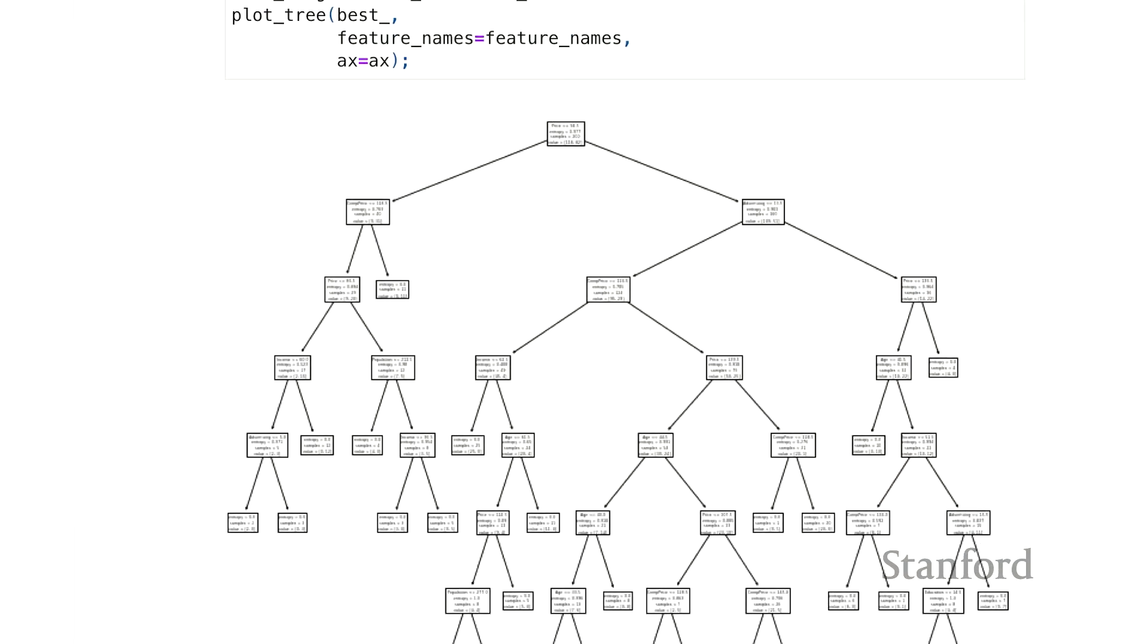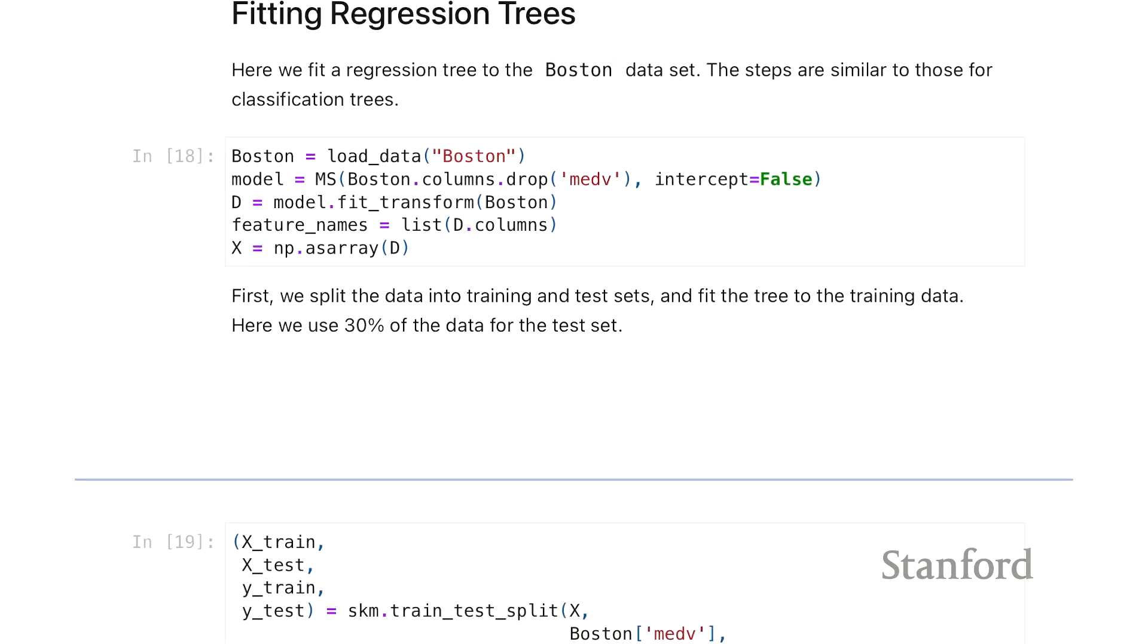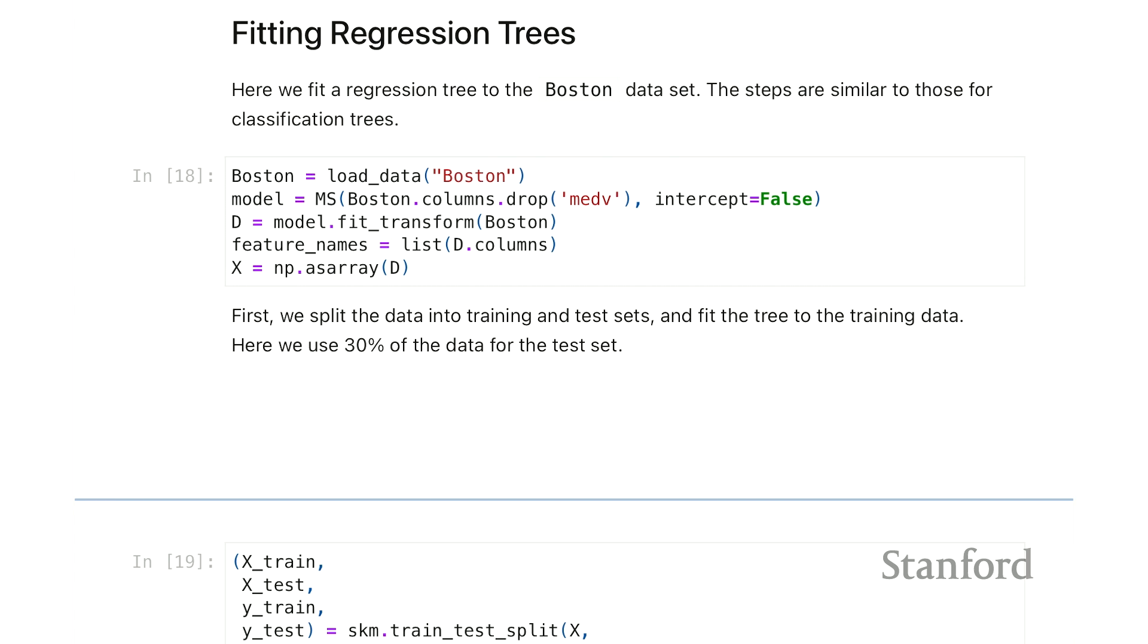The data set we're going to use for regression today is the Boston data set we saw in Chapter 3. And the preprocessing is pretty simple. We just have to define a set of features, and we'll do that by making a design matrix, as if we were doing linear regression and just taking the design matrix. Though we don't want to include an intercept, so we're going to say intercept equals false, because the regression trees fit their own intercept, and it could be problematic having an intercept column in there. So for regression trees, we're going to convert the design matrix to an array rather than a data frame. So we lose some of the feature names, but this is the preferred data format for fitting the regression tree.